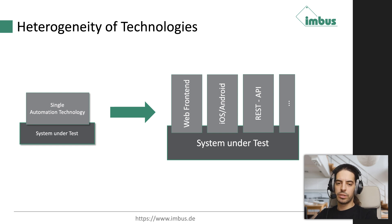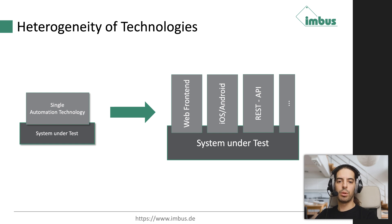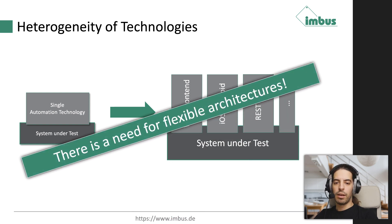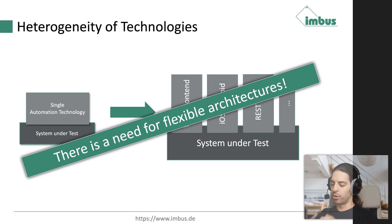Today, we have a different situation. We often have a heterogeneity of technologies, which means we have a lot of different technologies in one system. For example, we have web front-ends, maybe some mobile devices connecting to our system, some APIs, a database in the back-end, and interfaces for third-party systems. So today, we have to have a more flexible architecture than in the past.